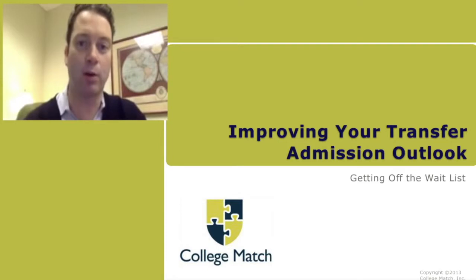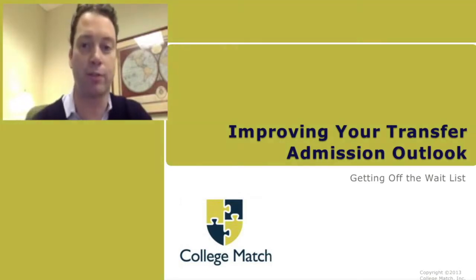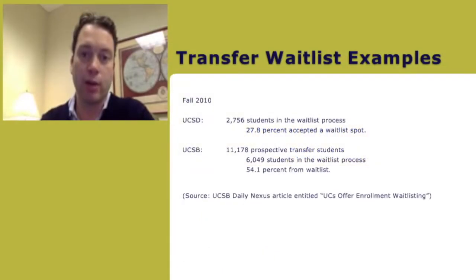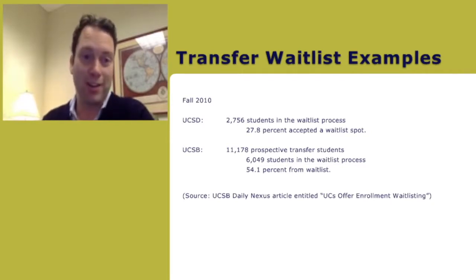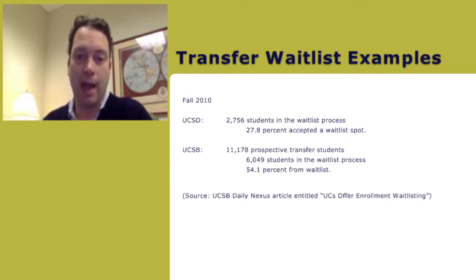My name is David Montesano and we're going to be discussing improving your transfer admission outlook — getting off the waitlist. I wanted to show you some transfer waitlist examples. These are from UCs, and they're a little older. UCSD had 2,756 students in their waitlist process and 27.8% accepted a position on the waitlist.